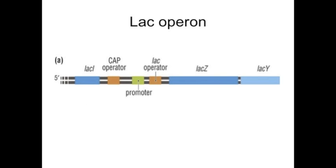The lac operon has several important components. One is the CAP operator, where the CAP protein binds. There is the lac operator, where the lacI will bind. These are all parts of the promoters, which are in front of the lacZ, lacY, and lacA genes.